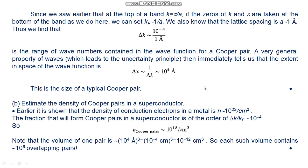Part (b): Estimate the density of Cooper pairs in a superconductor. The density of conduction electrons in the metal is n equals 10 to the 22 per cubic centimeter. The fraction that will form Cooper pairs is of the order of Δk divided by k_f, approximately 10 to the minus 4, so the density of Cooper pairs equals 10 to the 18 per cubic centimeter. Note that the volume of one pair is about 10 to the minus 20 cubic centimeters, so each such volume contains approximately one million overlapping pairs.